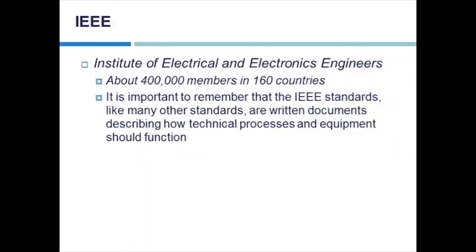The IEEE, as mentioned before, comes up with standards — not building equipment, just guidelines and standards that equipment should be built to. They have about 400,000 members in 160 different countries. They create written documents describing how technical processes and equipment should function. Years ago when we got excited about high throughput 802.11n, the IEEE hadn't finished that document before vendors started releasing equipment. There were compatibility problems early on, but once it was standardized, vendors made their equipment conform, and the Wi-Fi Alliance could verify they worked within those guidelines.